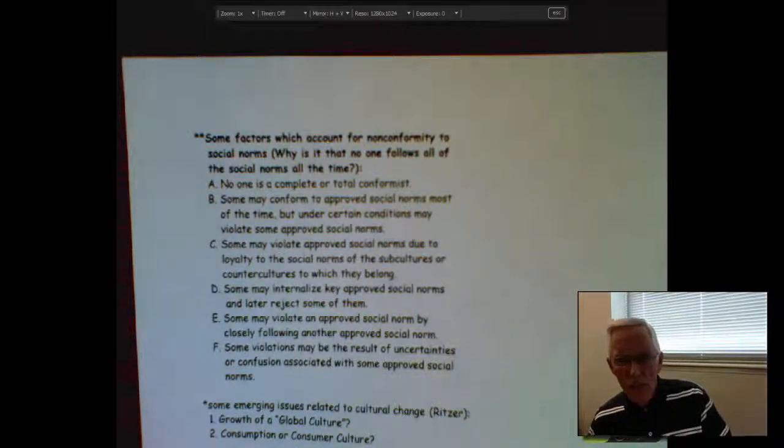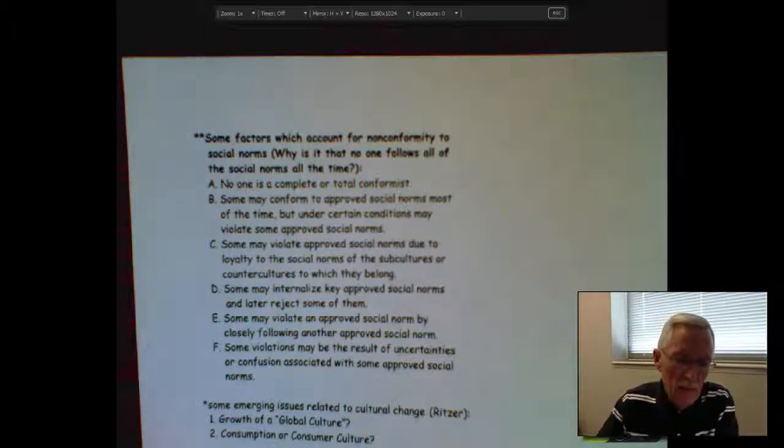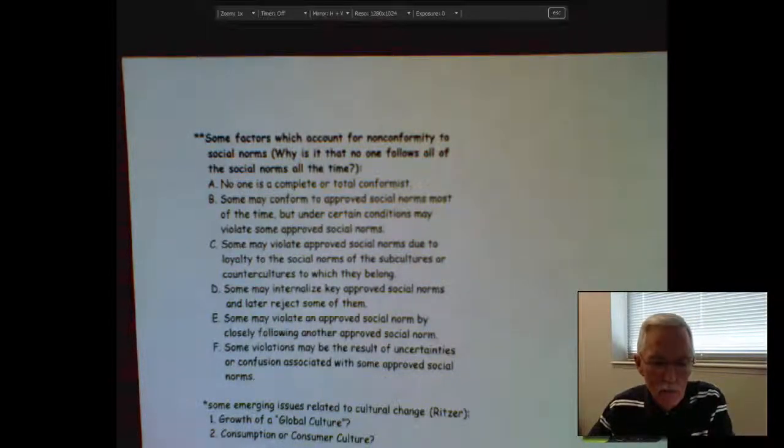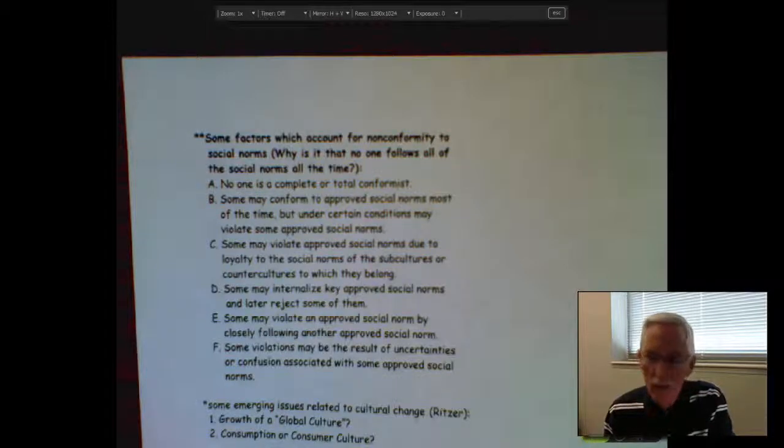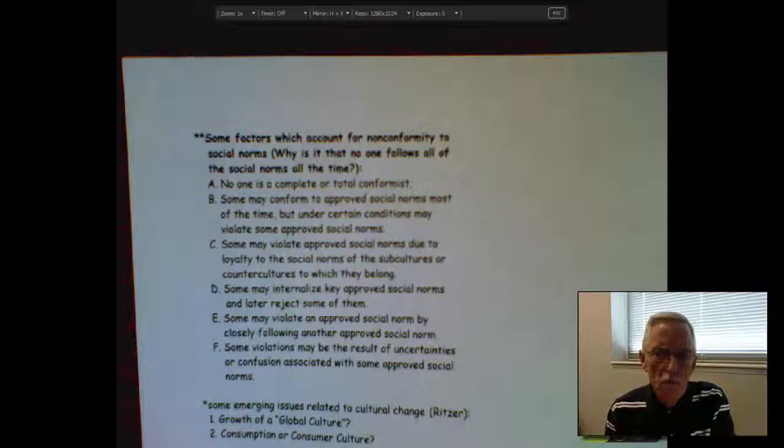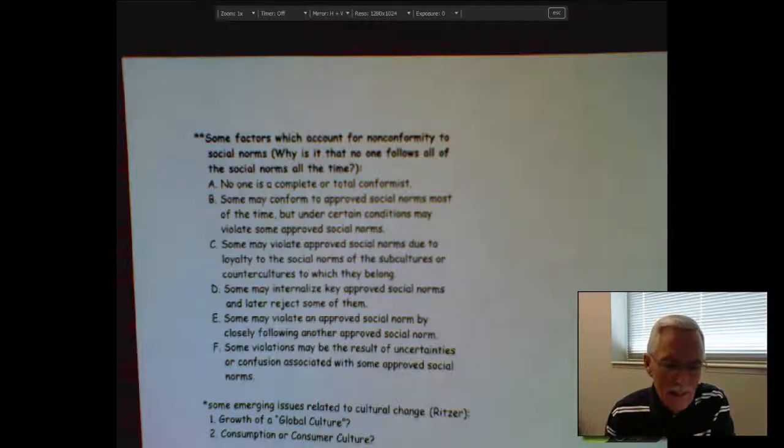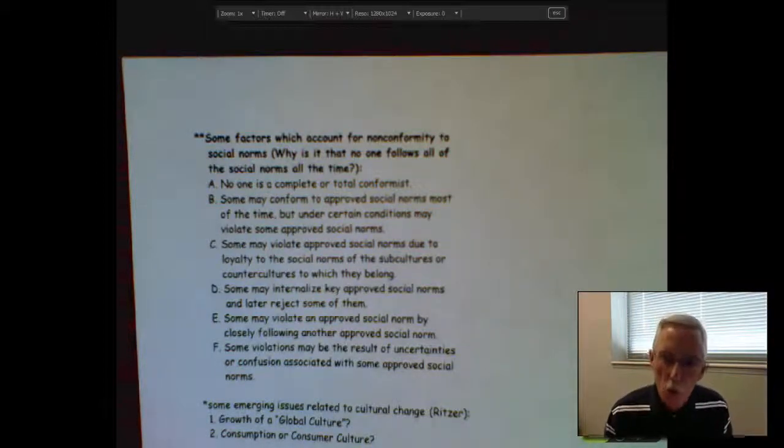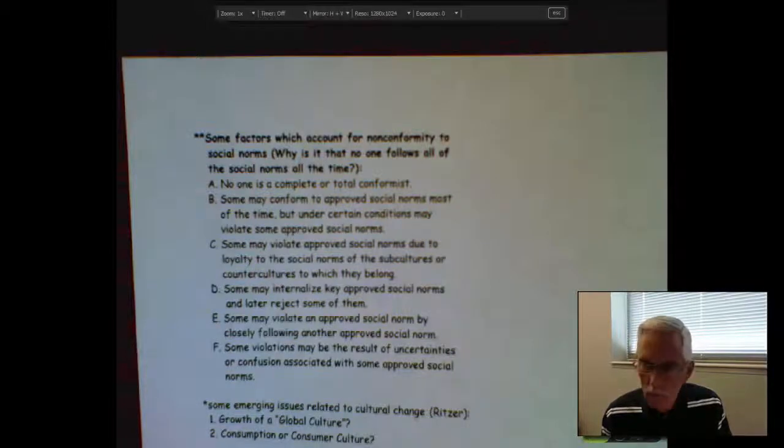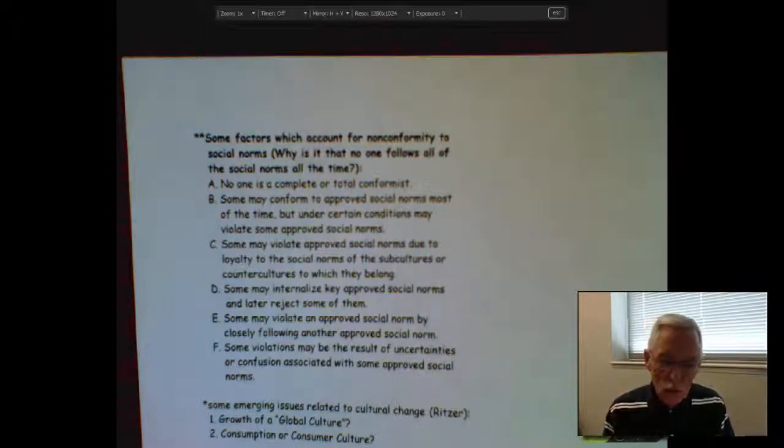Now, the second, B. Bear in mind again that any of us might conform or follow the approved norms most of the time. But under certain conditions may violate some of these approved norms. Most of you might most of the time follow the speed limit. But if you're running late or if there's an emergency situation, like your wife is about to have a baby and you are rushing her to the hospital, is it possible you might violate the speed limit? Likewise, one may violate approved norms due to being loyal to the norms of the subculture or the counterculture of which they are a part.